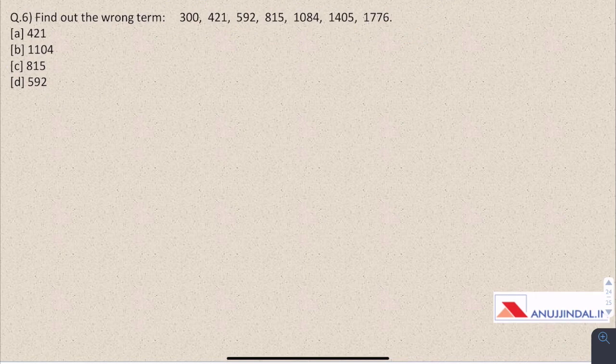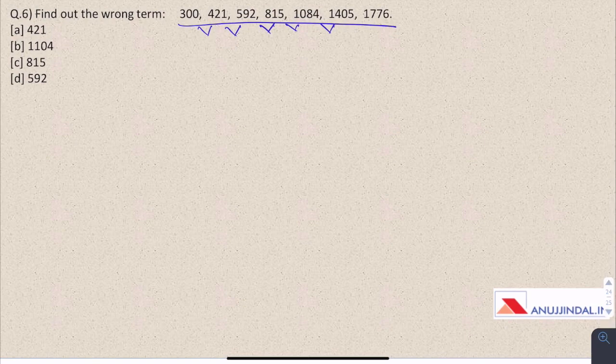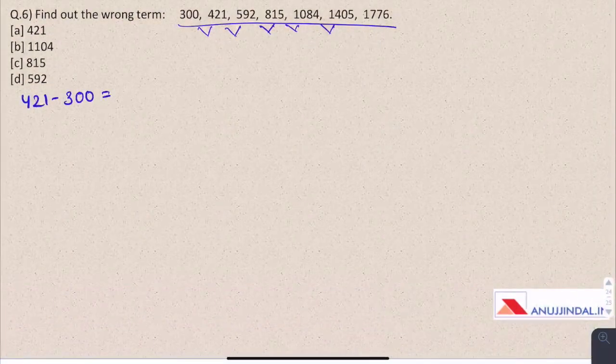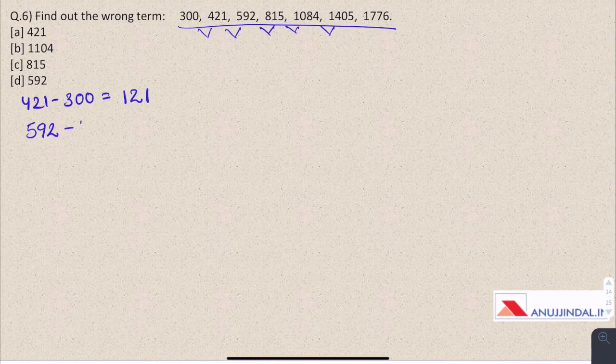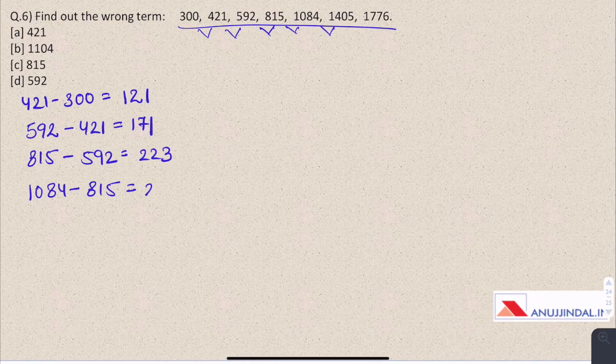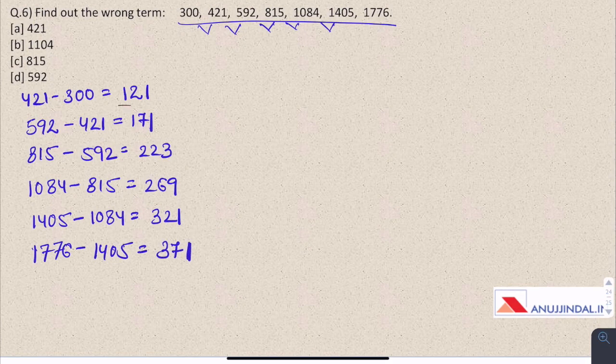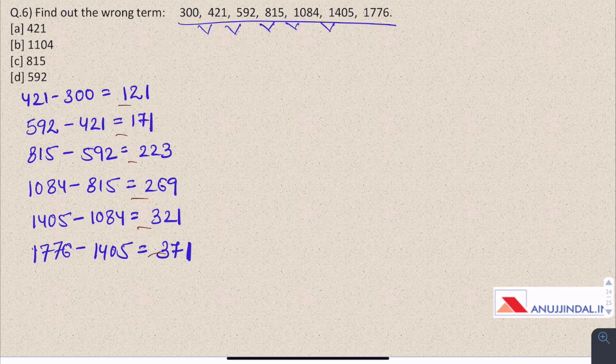Question 6: find out the wrong term. So here we have been given a series. Let us start by finding the difference between the consecutive two numbers in the series. So 421 minus 300 comes out to be 121, 592 minus 421 is 171, 815 minus 592 is 223, 1084 minus 815 is 269, 1405 minus 1084 is 321, and 1776 minus 1405 is 371. So by observing these numbers we are actually not able to see any connection or link.